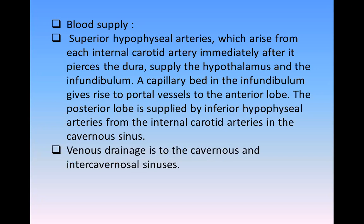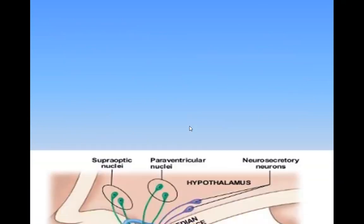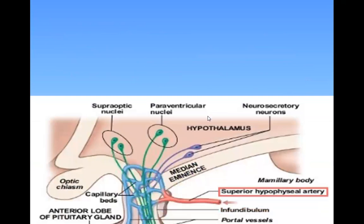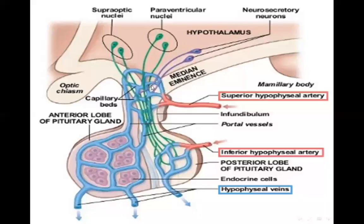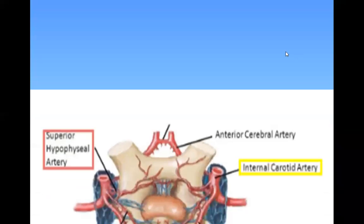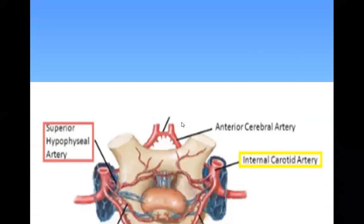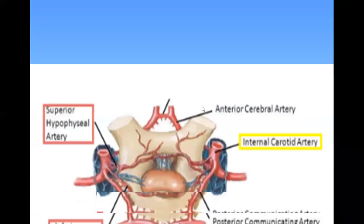Venous drainage is to the cavernous and intercavernous sinuses. As we see here, this is the superior hypophysial artery and this is the inferior hypophysial artery. Both arise from the internal carotid artery. The superior supplies the hypothalamus, then the infundibulum, then the capillary bed gives rise to portal vessels supplying the anterior pituitary. The posterior lobe is supplied by the inferior hypophysial artery.